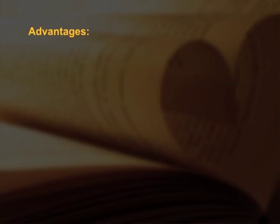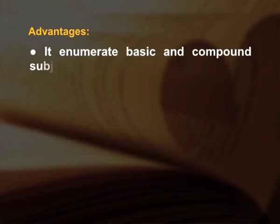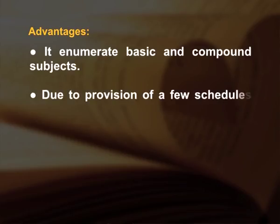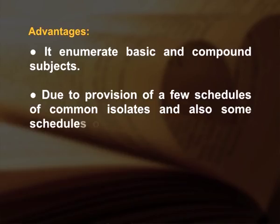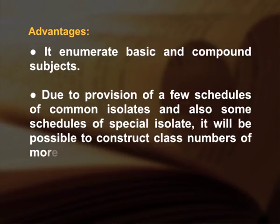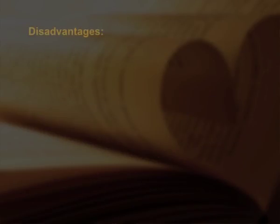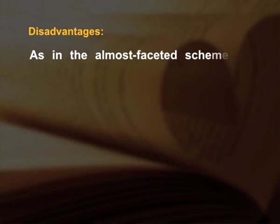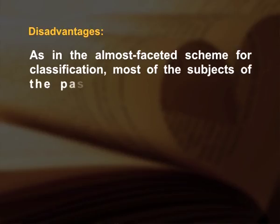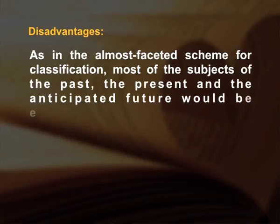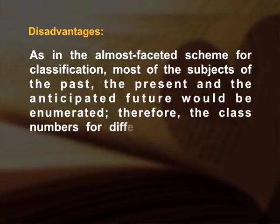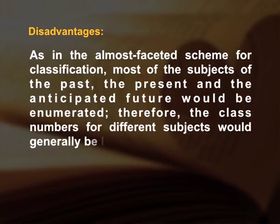Advantages of almost faceted classification scheme: first, it enumerates basic and compound subjects; second, due to provision of a few schedules of common isolates and also some schedules of special isolates, it is possible to construct class numbers of more compound subjects; third, the class numbers will be polylithic. Disadvantages: as in the most faceted scheme, most subjects of the past, the present and the anticipated future would be enumerated, and therefore the class numbers for different subjects would generally be long.